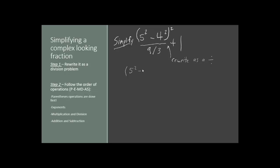So we still have 5 squared minus 4 squared, and now a division sign, and then 9 divided by 3, plus 1. The 5 squared minus 4 squared came from the top, and the 9 divided by 3 came from the bottom. Let's add some parentheses to the bottom part just so we can remember that whole thing was the bottom. Now that we've got it all written out nicely, let's follow the order of operations.